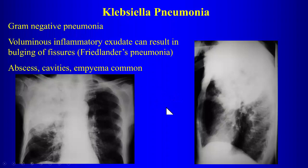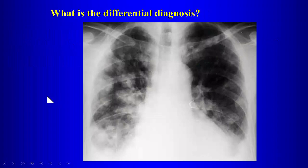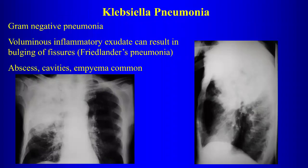Other gram-negative virulent organisms can also cause Friedlander's pneumonia, but it is classically caused by Klebsiella. For necrotizing pneumonia, we look for cavitation. These types of pneumonias result in complications like necrotizing pneumonia, cavitation, and abscesses. For necrotizing pneumonia, we want to see cavitation.